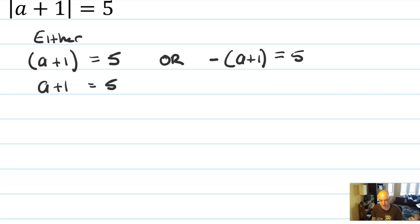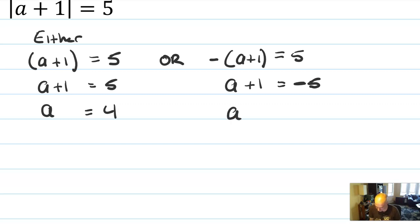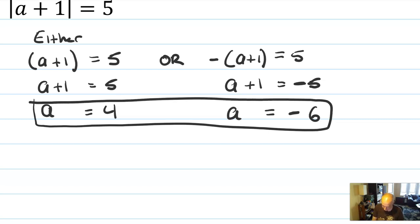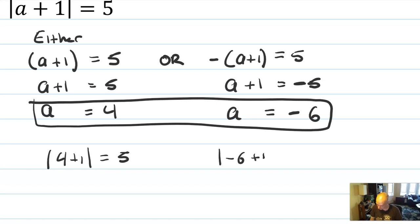In this case, a would be 4. In the other case, multiply by negative 1, so a plus 1 equals negative 5 and a equals negative 6. Those are my two solutions — circle both of them. Let's plug them in and check. Is the absolute value of 4 plus 1 equal to 5? Yes. Is the absolute value of negative 6 plus 1 equal to 5? Yes, because negative 6 plus 1 is negative 5, and the absolute value of negative 5 is 5. That is why both solutions work.